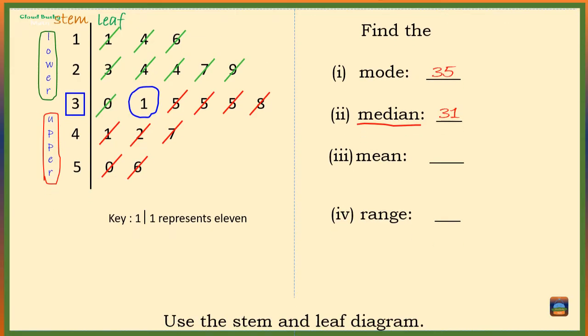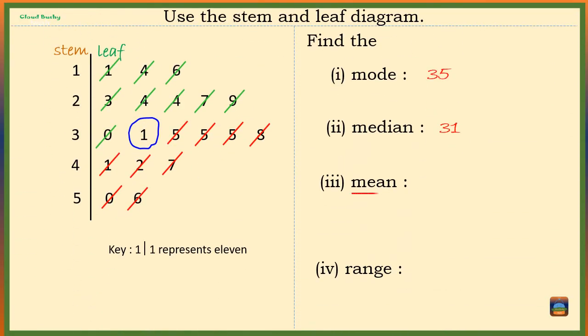Let's move on to find the mean. To find the mean we add all numbers and divide the total by how many numbers we have added. We have 19 numbers in the stem and leaf diagram.